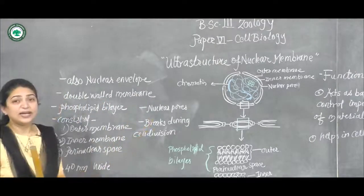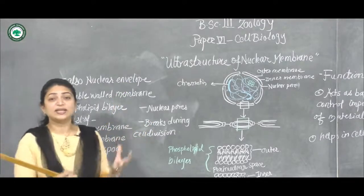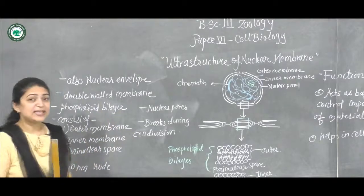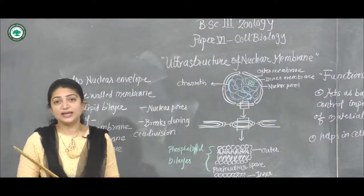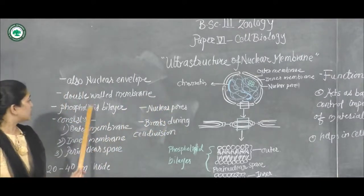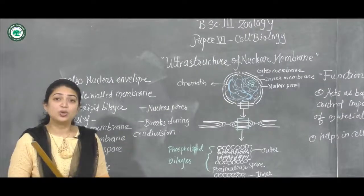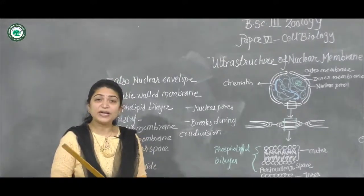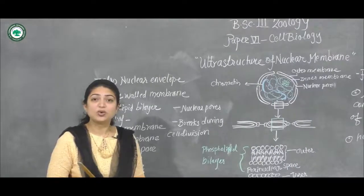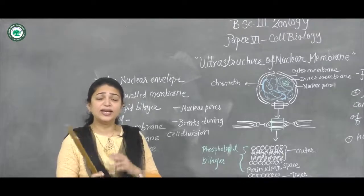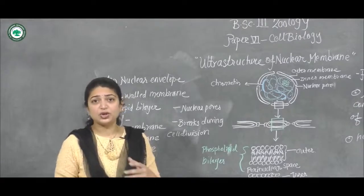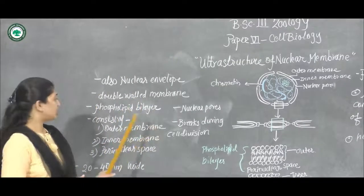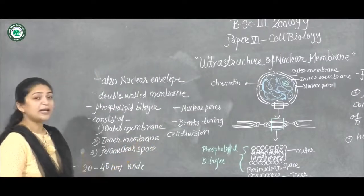The nuclear membrane is also called as nuclear envelope because it gives a covering membrane to the nucleus. It is a double-walled membrane — double means there are two layers present. This double-walled membrane is also called as phospholipid bilayer, because it is made up of two membranes and phospholipids are the content present in the membrane. This membrane consists of the outer membrane, the inner membrane, and a perinuclear space.